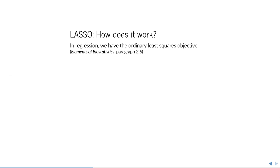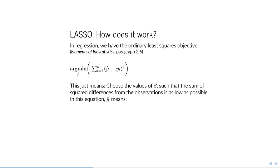In regression, we have the ordinary least squares objective, which means: choose the values of beta such that the sum of squared differences between the observed values yi and the predicted values ŷ is as low as possible. When you have fewer observations than parameters, you can't estimate this equation. So lasso adds a penalty: lambda times the sum of absolute coefficients. This ensures that no matter how many coefficients we add, we can always minimize the objective.